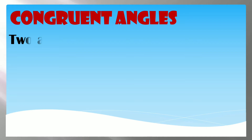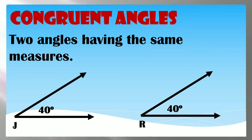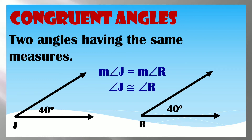Congruent Angles are two angles having the same measure. When two angles are paired with equal measures, we call them congruent angles. Angle J and Angle R are congruent angles since they both measure 40 degrees. Therefore, the measure of Angle J equals the measure of Angle R, and Angle J is congruent to Angle R.